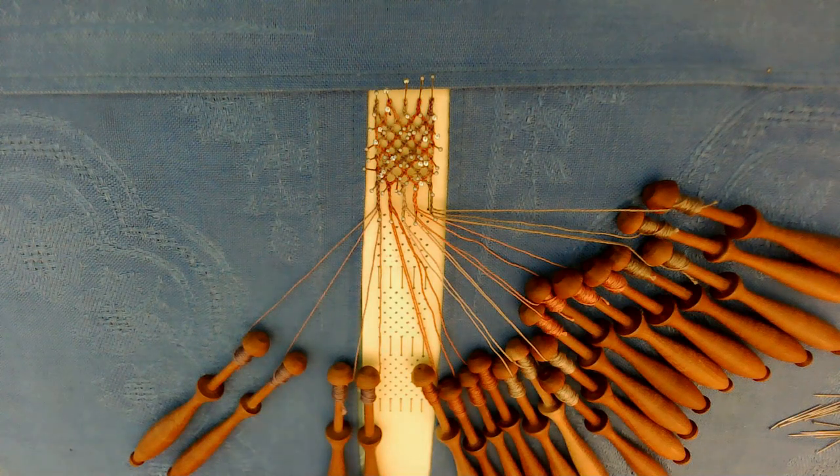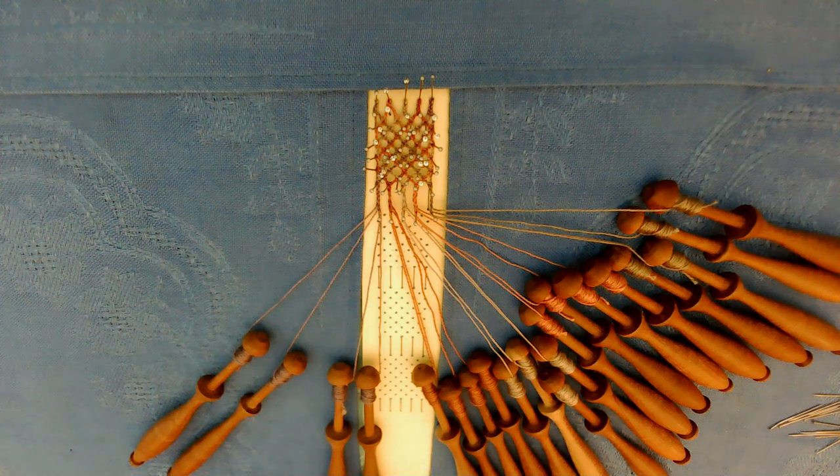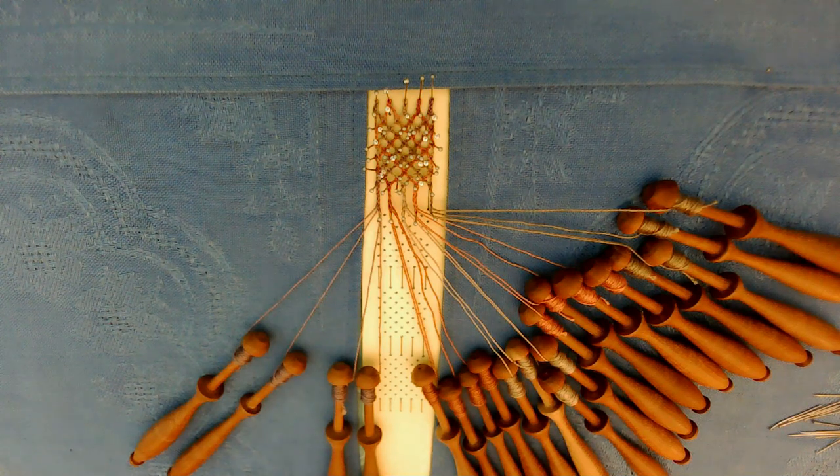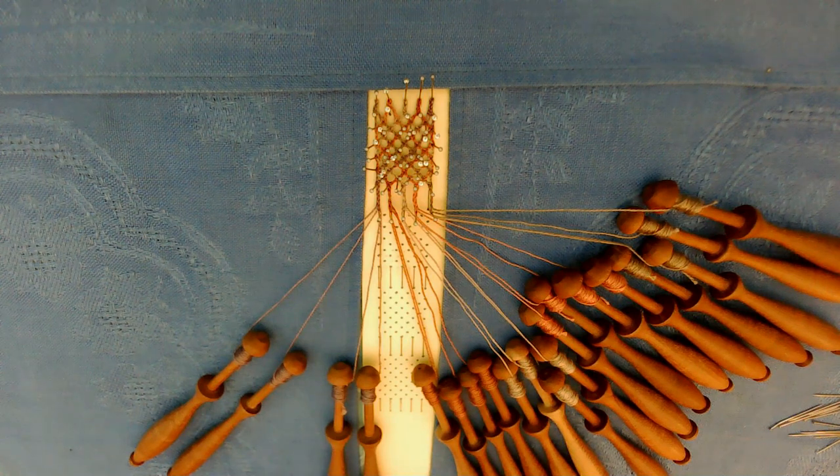The second ground is Dieppe, D-I-E-P-P-E. To complete this ground, it's cross twist, pin, cross twist, twist.